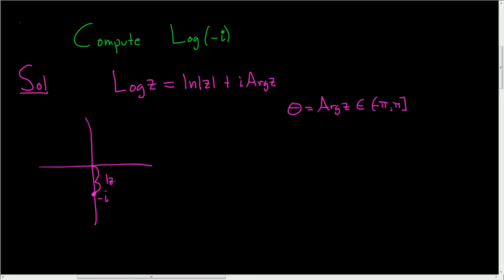So the modulus of our complex number z is 1. And the angle here that lives in this interval is going to be negative pi over 2.